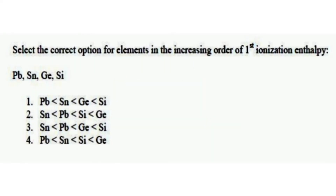The next question: select the correct option for the elements in increasing order of first ionization energy in group IVA, containing lead, tin, germanium, and silicon. The right answer is option three.